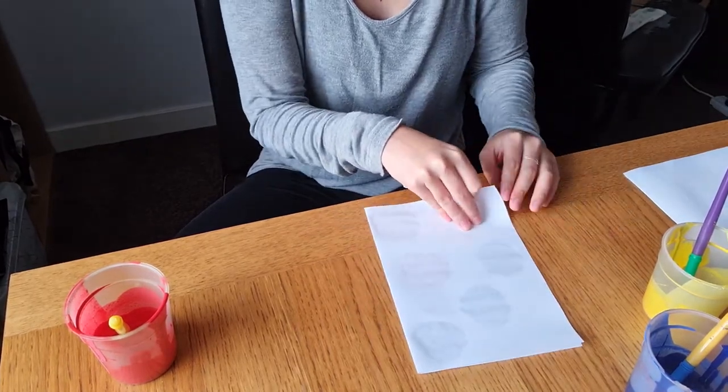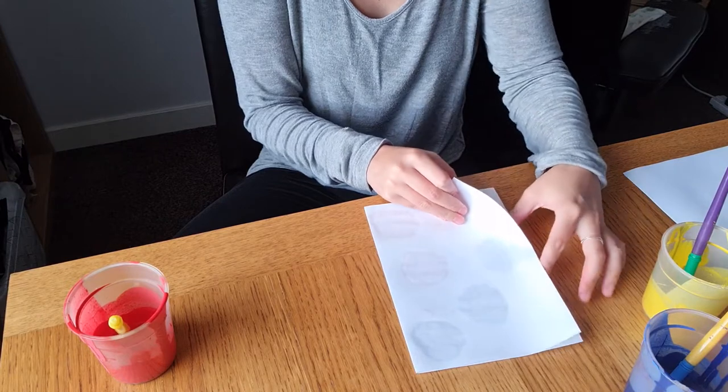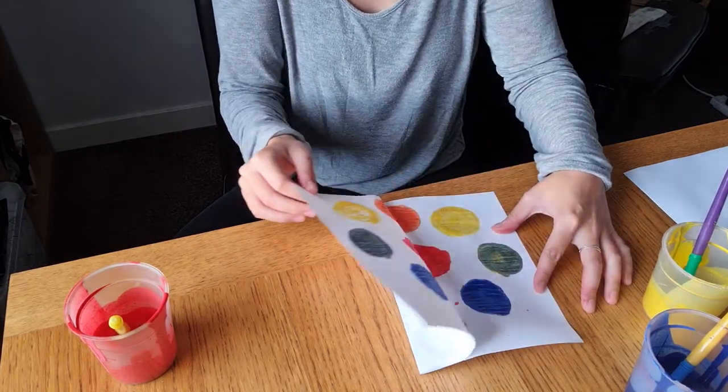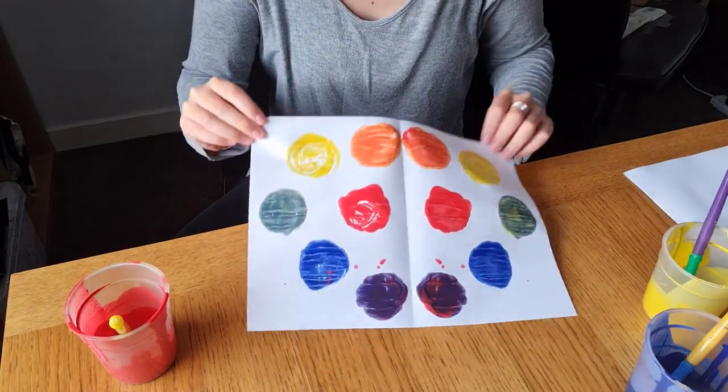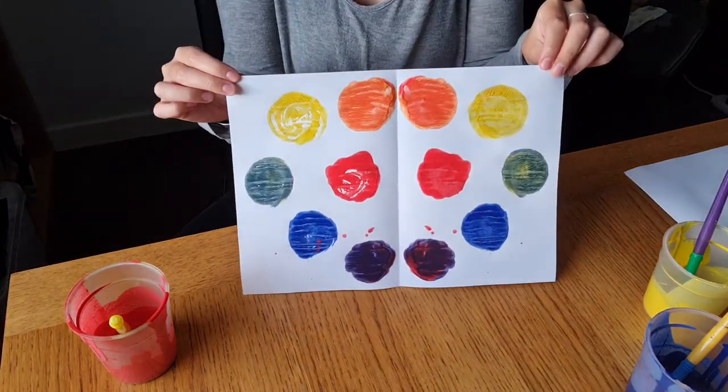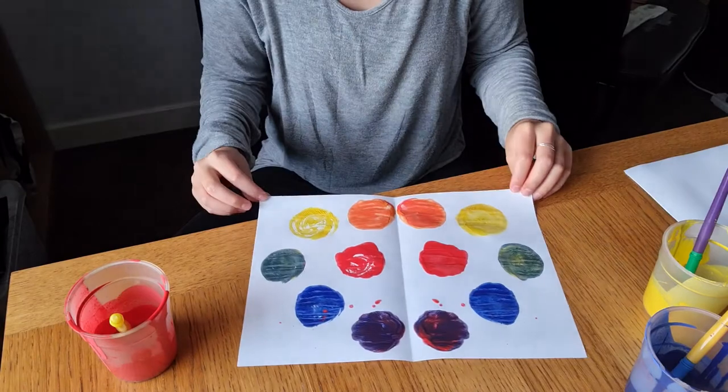Then when we open it back up again, it should have spots on both sides of the paper that look the same or in the same position. So this is my first symmetrical picture with all my different colored spots that I've managed to mix and make with all the three colors that I've got.